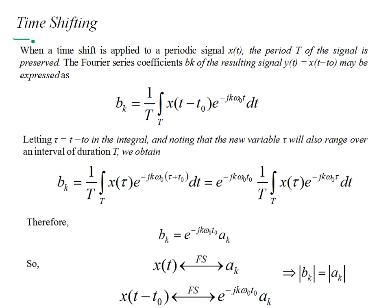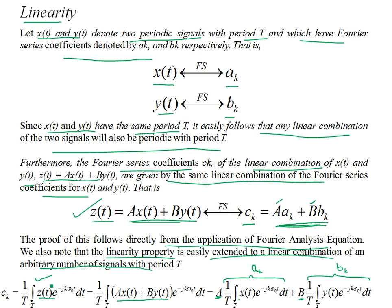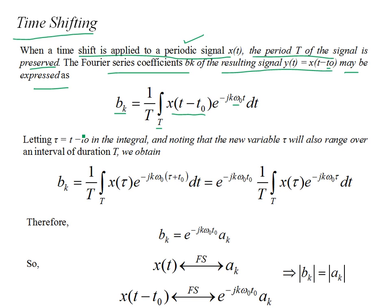The second property is time shifting. Intuitively, when you time shift a periodic signal x(t) having period T, the period T is preserved. So if you're going to time shift a periodic signal x(t) by t₀ — where t₀ can be a positive or negative real quantity — and use the Fourier analysis equation to find the coefficients, the period and fundamental frequency ω₀ = 2π/T remain the same.